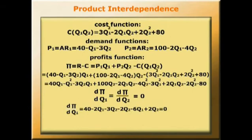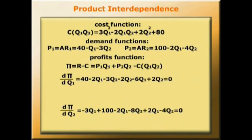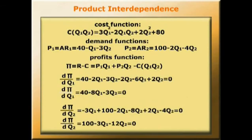Now we'll partially differentiate for output Q2 and set that to 0. The partial derivative dπ/dQ2 equals -3Q1 + 100 - 2Q1 - 8Q2 + 2Q1 - 4Q2, which simplifies to 100 - 3Q1 - 12Q2 equals 0. And now we've got two simultaneous equations to solve.